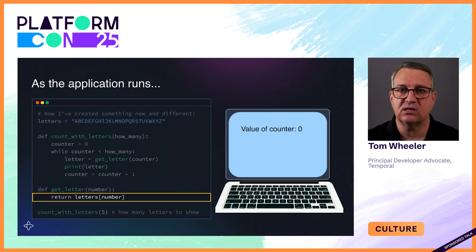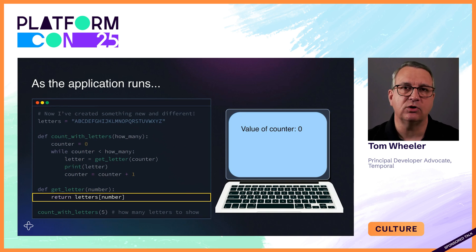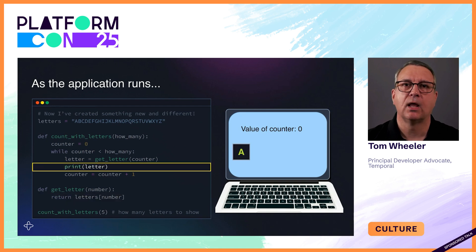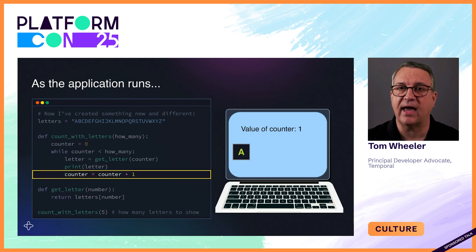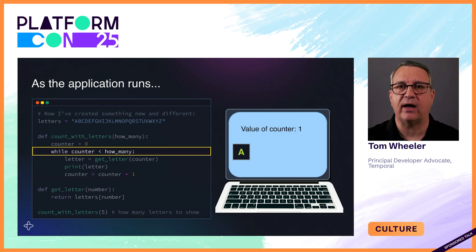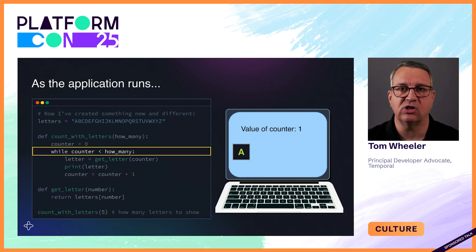In this case the value is zero, so it returns the first letter, which is A. Control returns to the original function, which prints that letter to the screen and increments the counter from zero to one. Since the counter value is less than five, it enters the loop again.